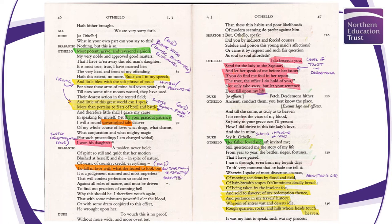Do also notice 'I won his daughter' — there is subtle objectification here, showing how this runs through culture and society at the time, even though Othello is far more progressive than the other characters and the relationship between him and Desdemona is one of more equality.